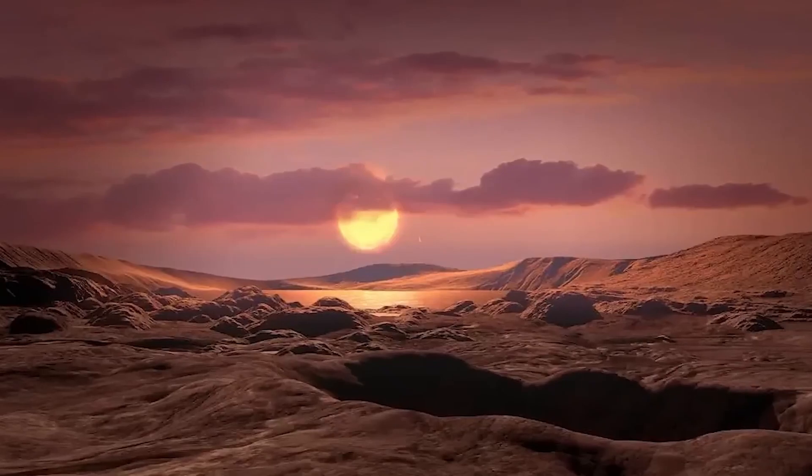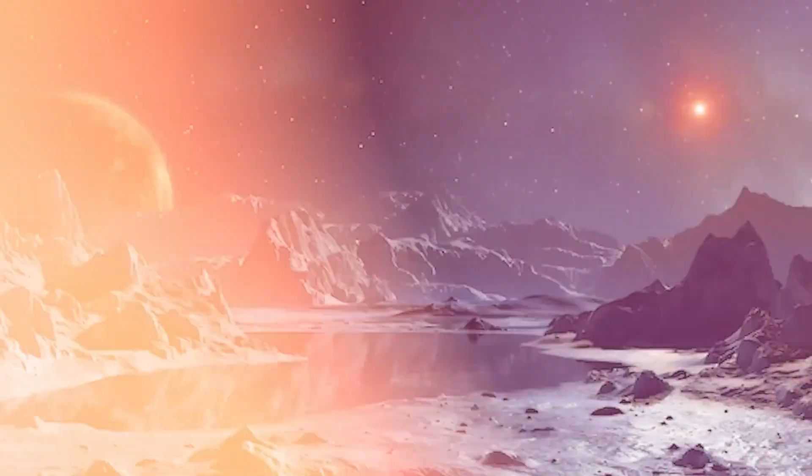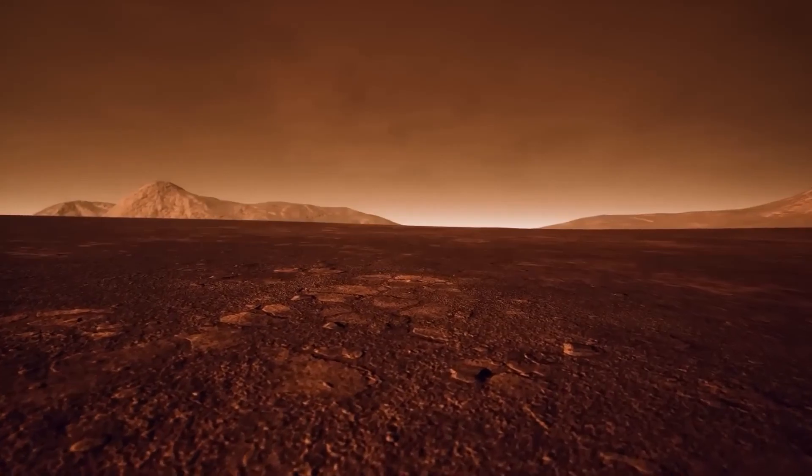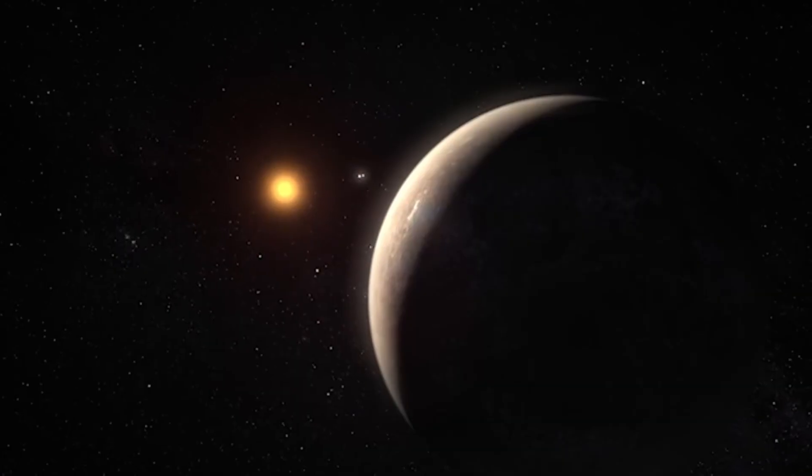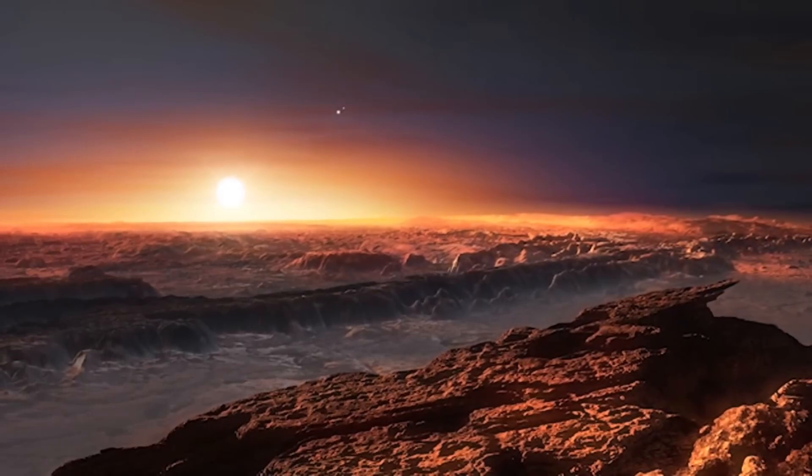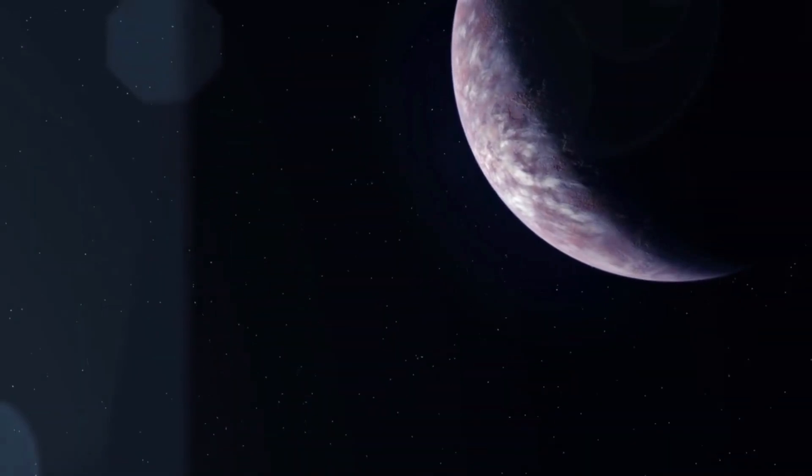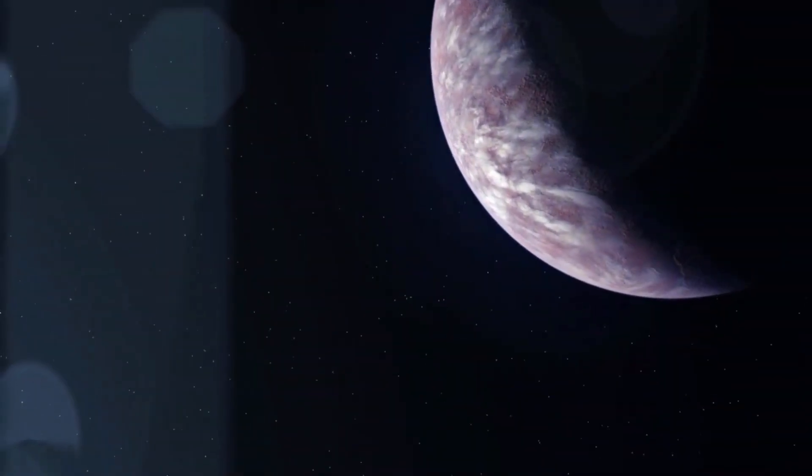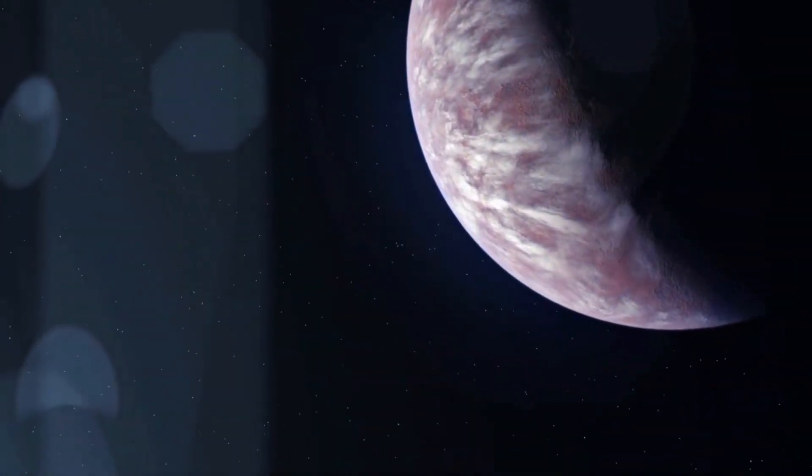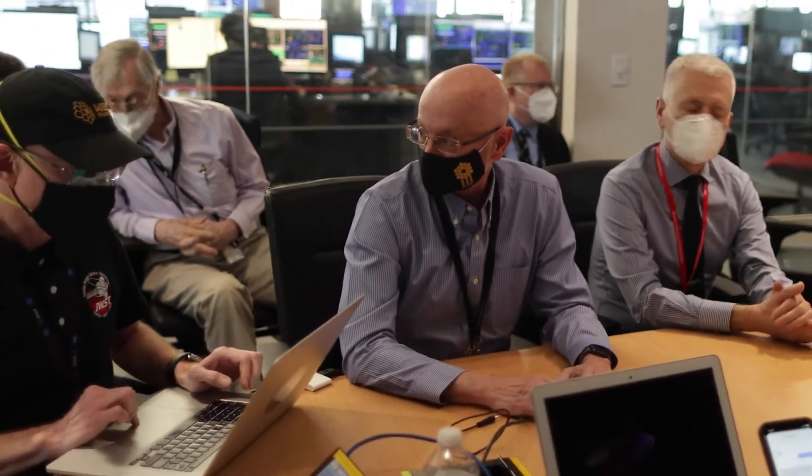Then came the 1960s, and space exploration hit another level. In 1962, NASA's Mariner 2 made history by successfully flying by Venus, revealing critical details about its atmosphere. Three years later, Mariner 4 took the spotlight with the first flyby of Mars, snapping photos that showed a cratered, rocky surface. This shook up earlier ideas of a lush, Earth-like Mars. It wasn't just a red dot in the sky anymore, it was a fascinating world begging for more exploration. The 1970s and 1980s turned out to be golden decades for space exploration. NASA's Viking program landed two spacecraft on Mars in 1976, searching for life and studying the planet's geology and atmosphere. While no signs of life were found, the data gathered was groundbreaking.